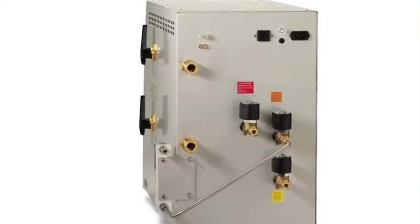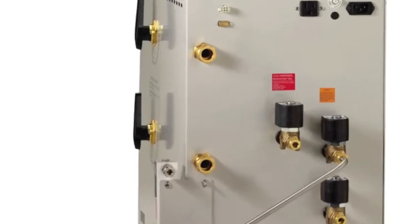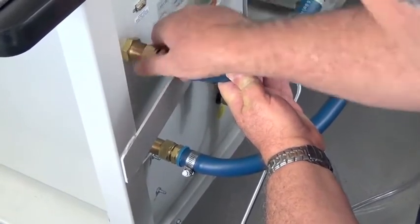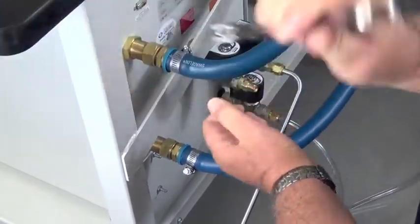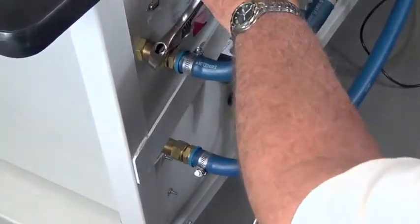Slightly loosen the two large Swagelok compression nuts located on the back of the AtmosPure and insert the tube barbs from the opposite end of each recirculation tube. Tighten the compression nut one quarter turn past finger tight to prevent leaks.